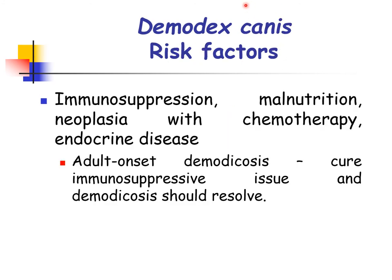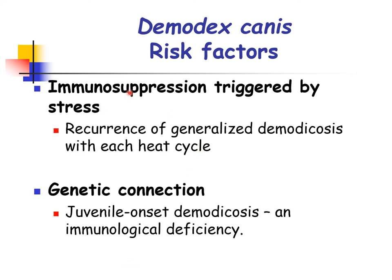Risk factors associated with demodicosis include immunosuppression, malnutrition, neoplasia or cancer with chemotherapy, and the presence of endocrine disease. In adult onset demodicosis, we need to first address the immunosuppressive issue and demodicosis should resolve. Immunosuppression triggered by stress is another risk factor; recurrence of generalized demodicosis can be associated with each heat cycle, which is considered a stress factor. There is also a genetic connection — juvenile onset demodicosis is associated with an immunological deficiency, and certain breeds of dogs are more prone to developing this form of demodicosis.